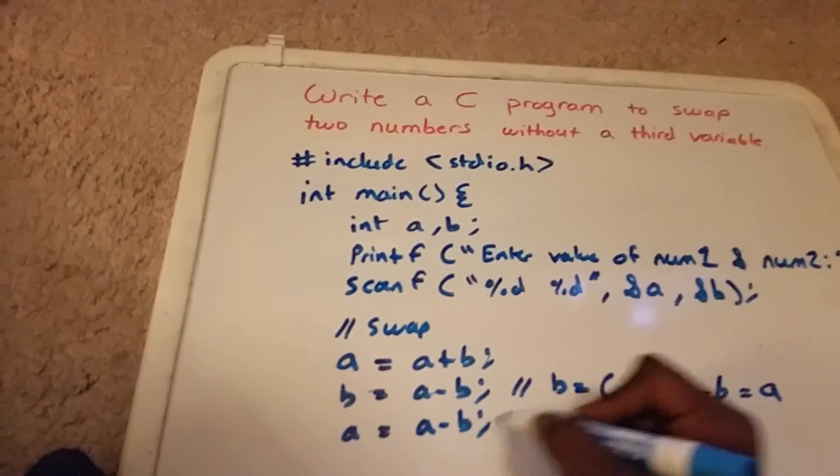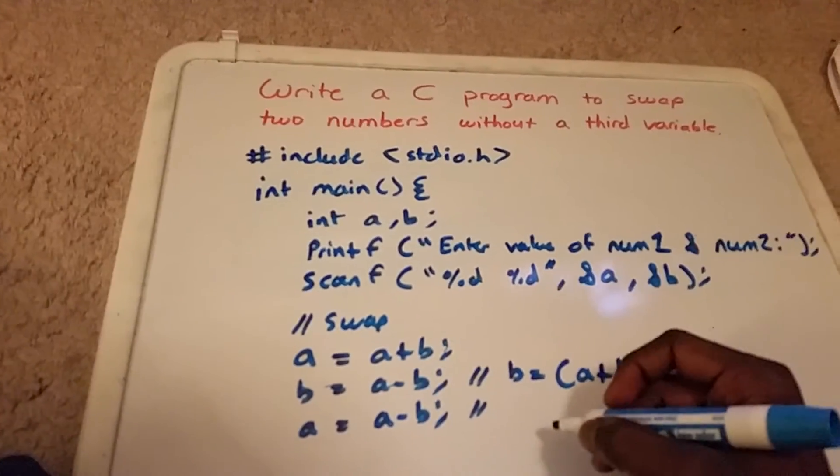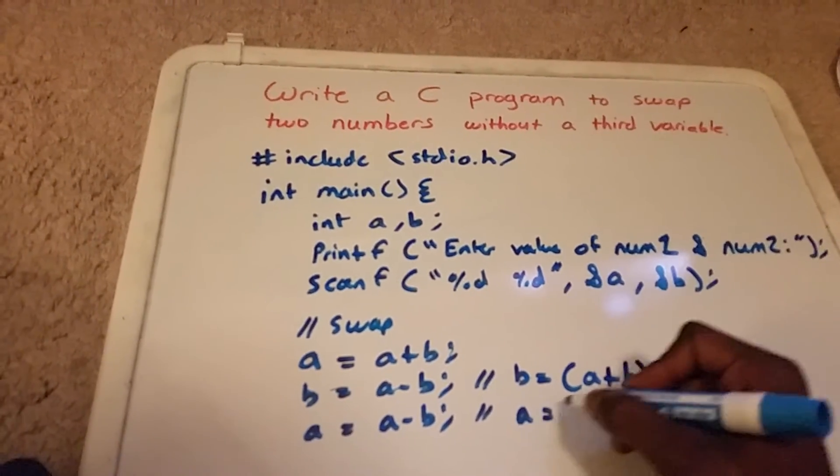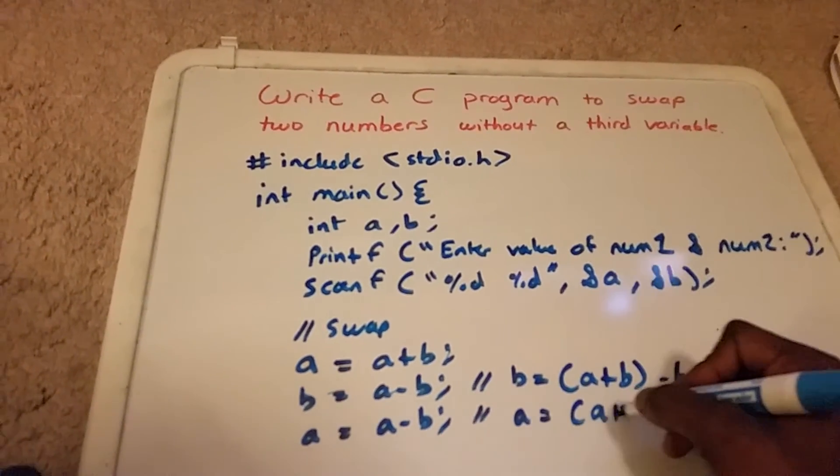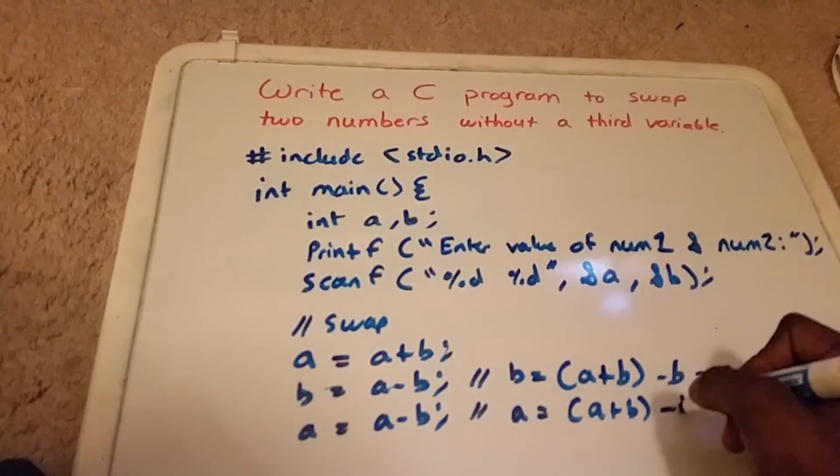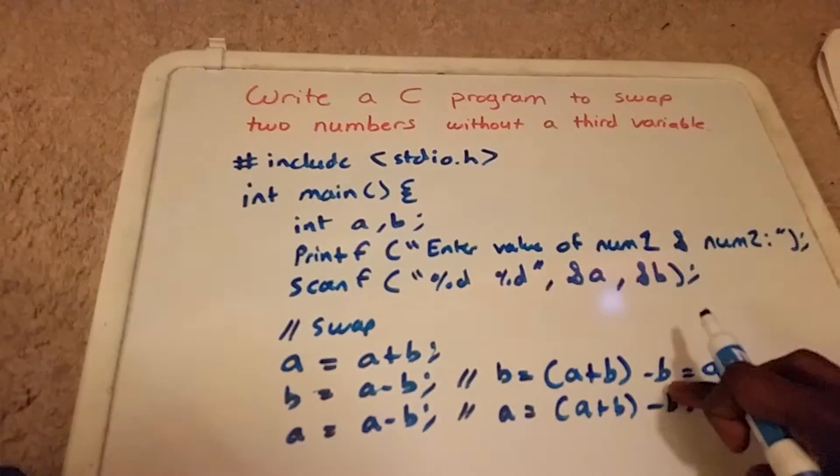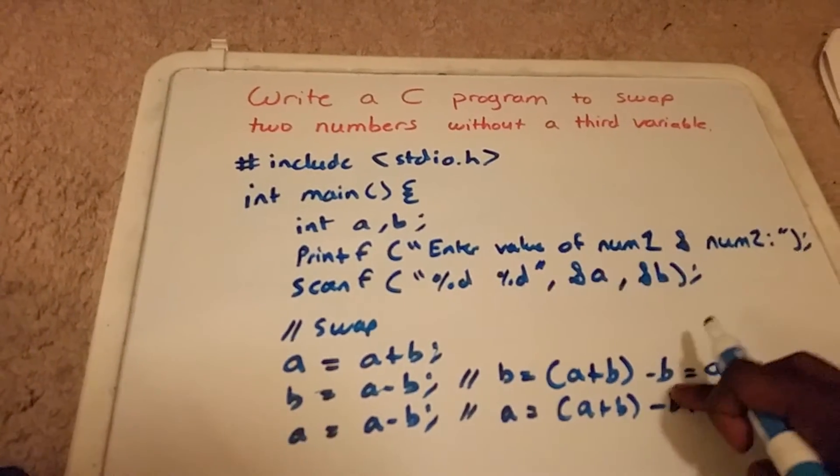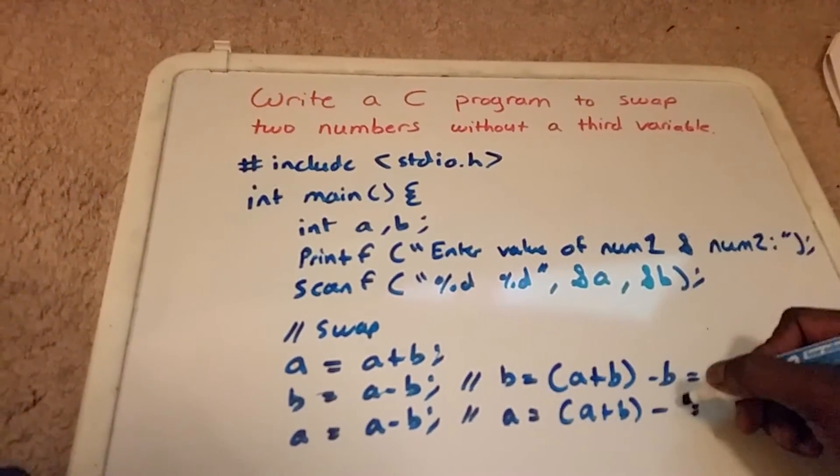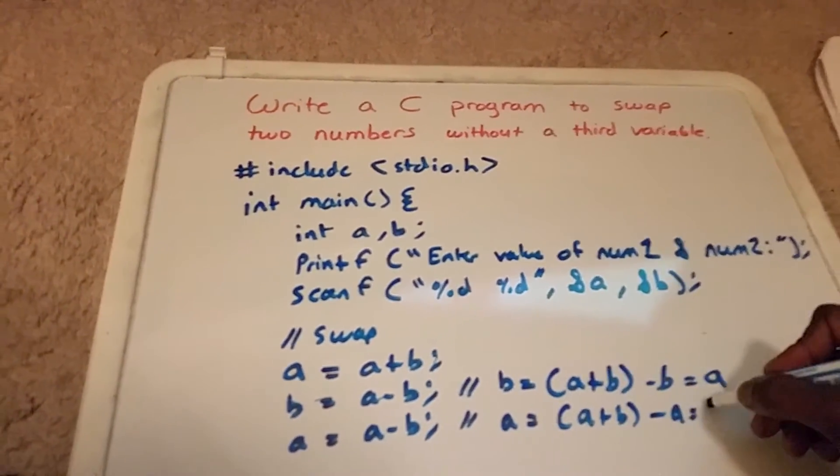Which is the same thing as b. Well, b is a now, so we're saying this minus a, which is equal to b.